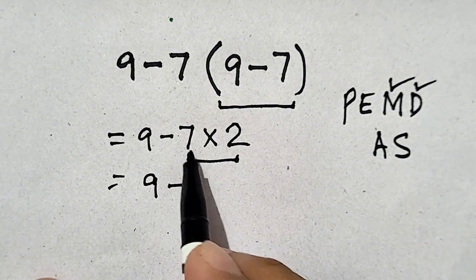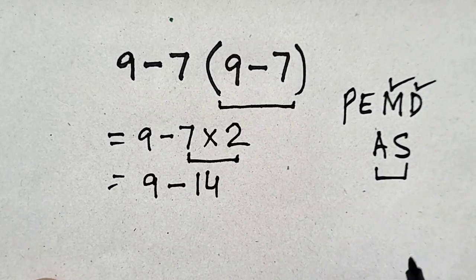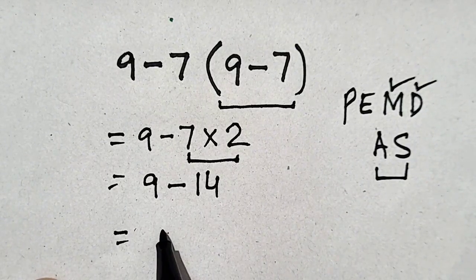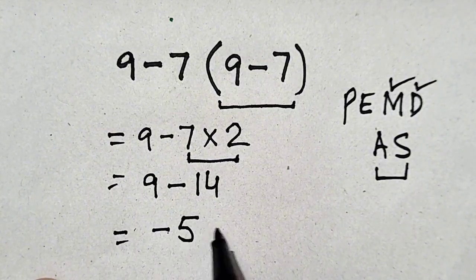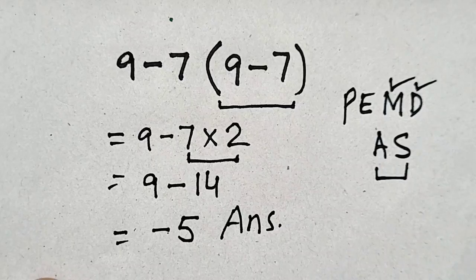Nine minus fourteen. Now, finally, addition and subtraction will be carried out. So, nine minus fourteen is equal to minus five, which will be our answer.